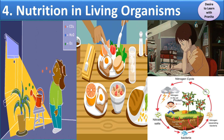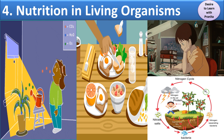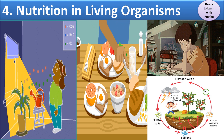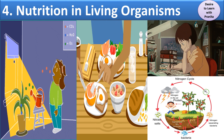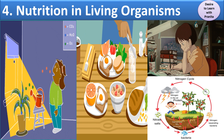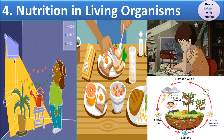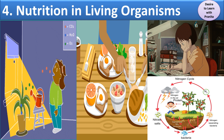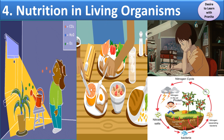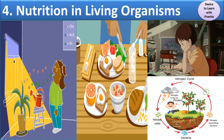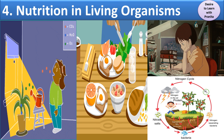Hello everyone, this is Pranita here. Welcome to my channel Desire to Learn Parshala. Today we are going to know about the lesson Nutrition in Living Organisms from the Standard 7 Science Textbook. In this lesson we are going to cover nutrition, types of nutrition, need of nutrition, autotrophic nutrition, heterotrophic nutrition, photosynthesis, transport system in the plant, biological fixation of nitrogen, and atmospheric fixation of nitrogen.